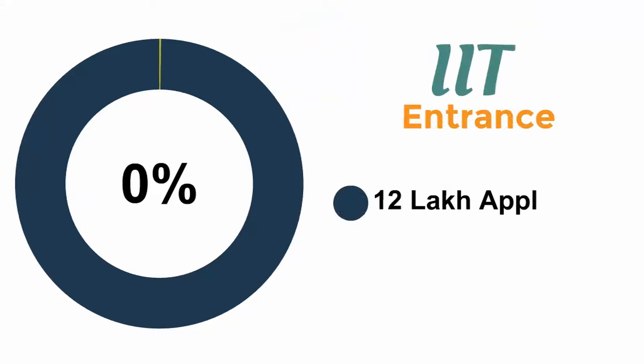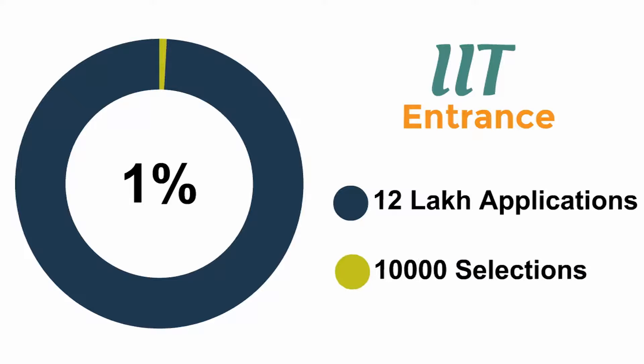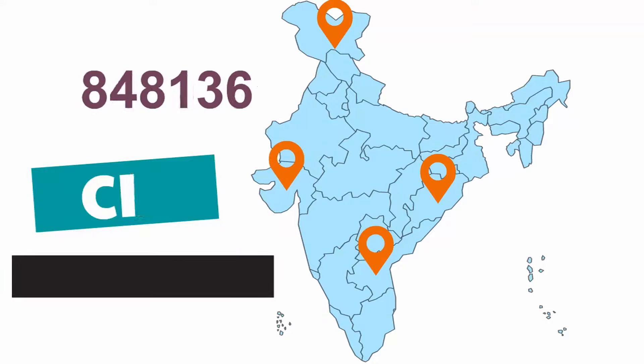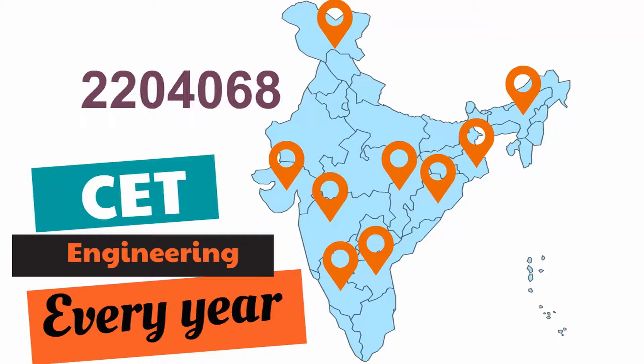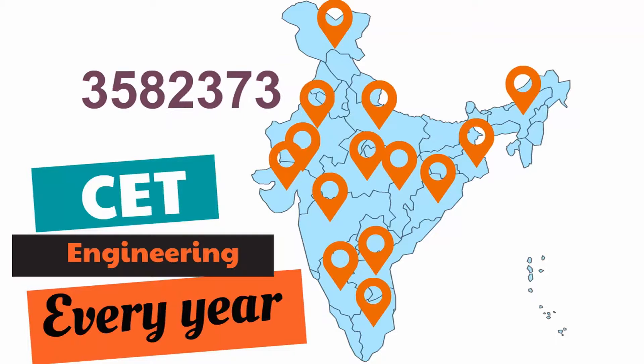Around 12 lakh students appear for IIT entrances each year and less than 10,000 make the cut. Additionally, 40 lakh students appear for engineering CETs in various states every year.